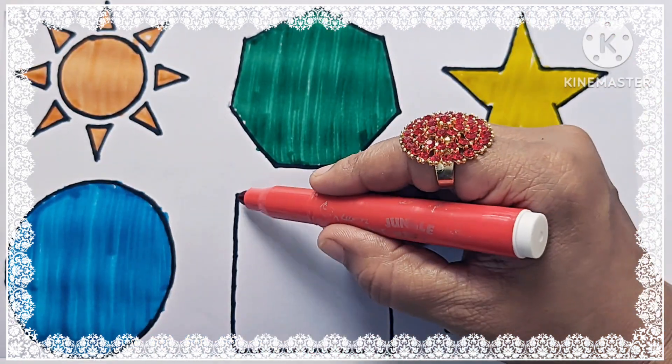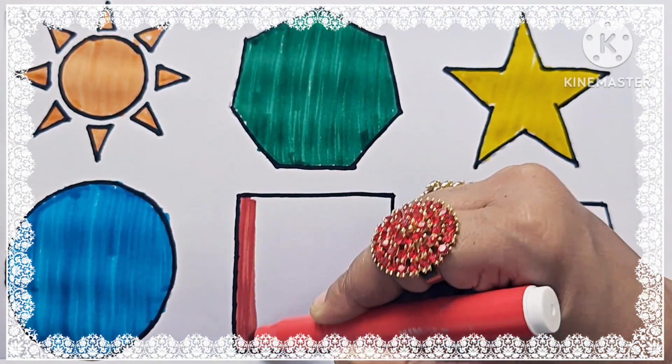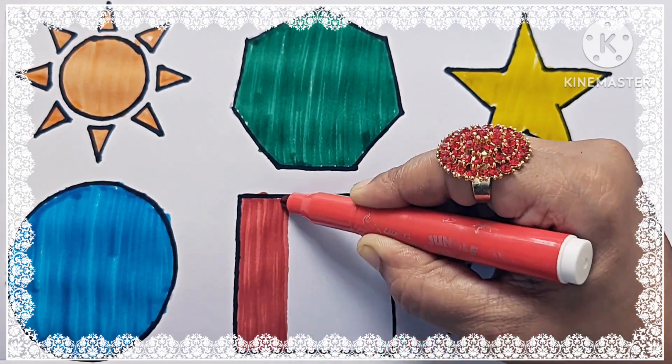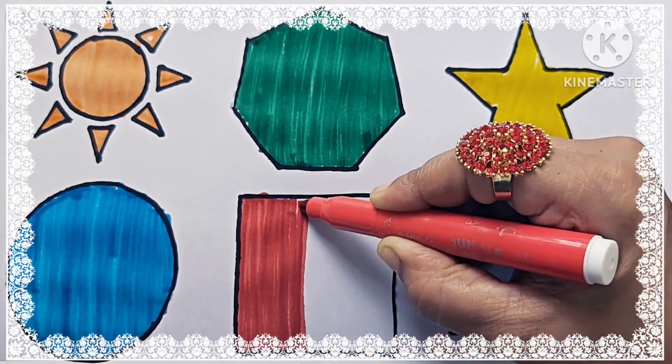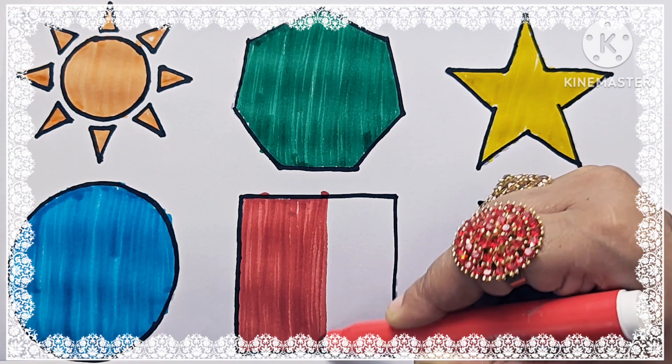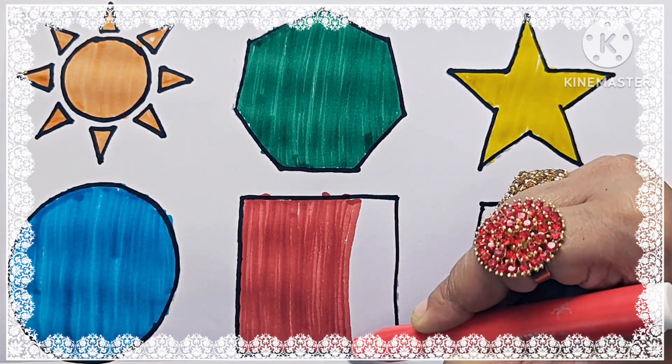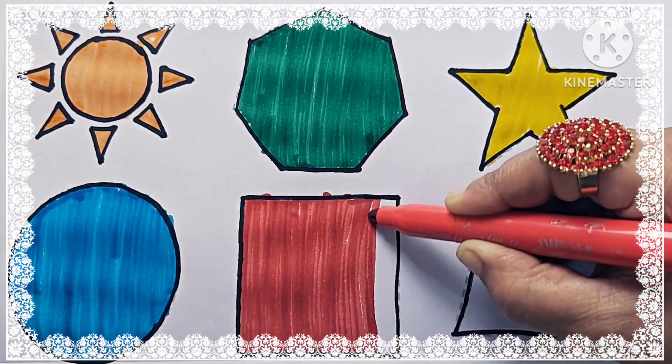This is red color. And the shape is square. Square has 4 sides. Color is red. And shape is square. It has 4 sides.